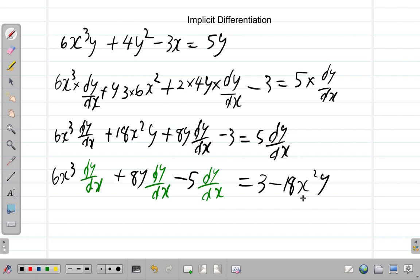Alright. Is everything covered? Right? It seems like everything is covered. So, what we have now? Let's factorize. So, we have dy by dx. And inside the bracket, we have 6x cubed plus 8y minus 5, close bracket, equals 3 minus 18x squared y.